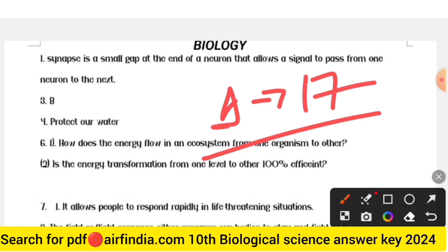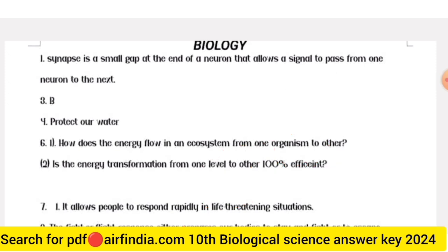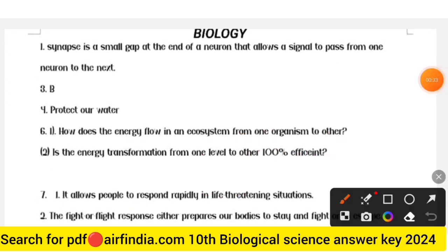If you don't know how to download the PDF, go on Google and type arp.com, then type your class and you can easily download PDFs on your mobile. Subscribe to our channel for all papers of Class 10th. Your first answer: synapse. Synapse is a small gap at the end of a neuron that allows a signal to pass from one neuron to the next.